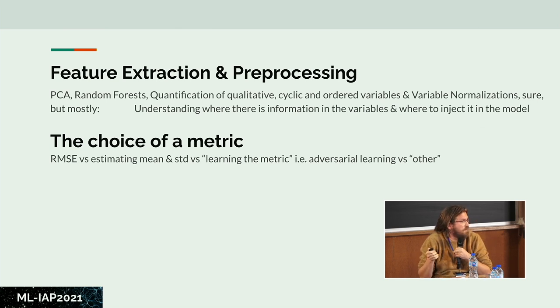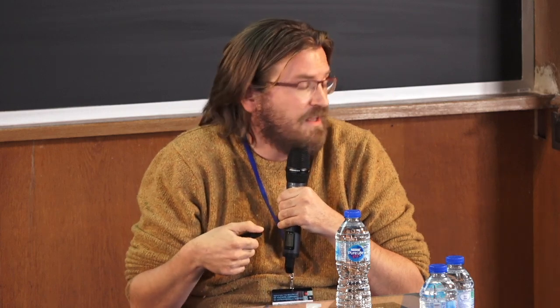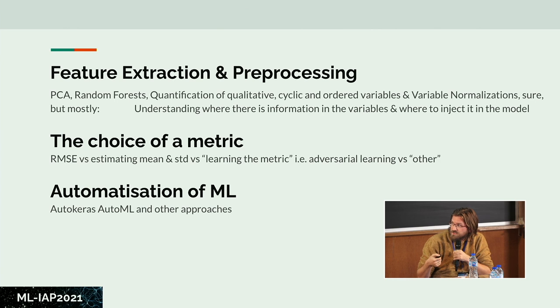Estimating uncertainty — mean and standard deviation — is something that can be very useful in the field. For the choice of metric, there's also adversarial learning: training another network to identify if your output is the correct output — similarly to GANs — which can really help because you outsource the learning of the correct metric to another part of the network. That can be very useful for image analysis. For people starting in the field, there are automated machine learning approaches with good instincts built in for normalizing, correcting, and splitting datasets to avoid data leakage.